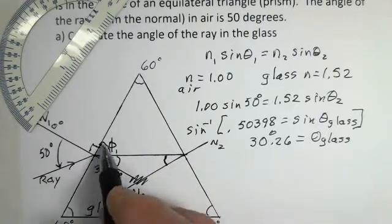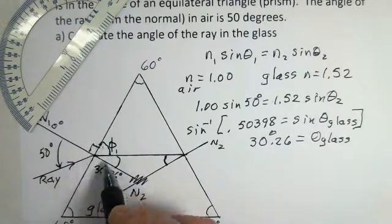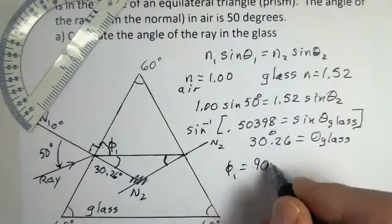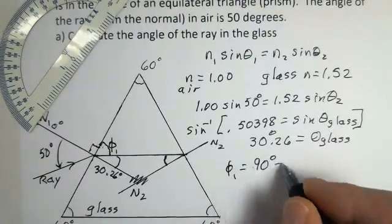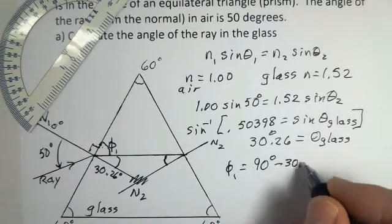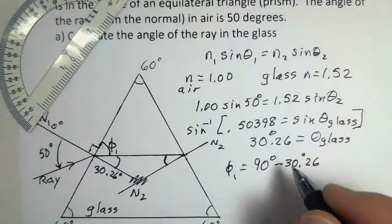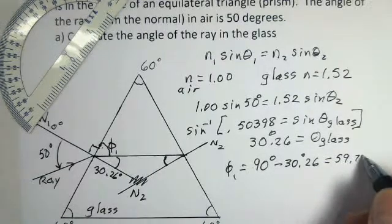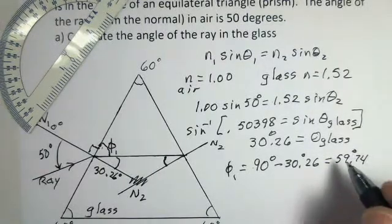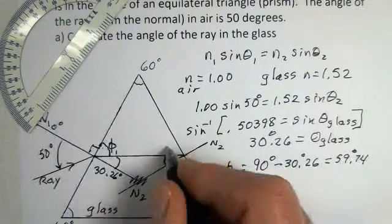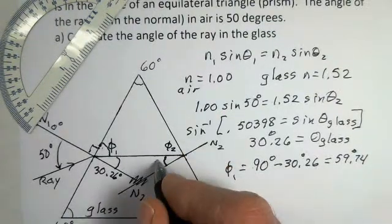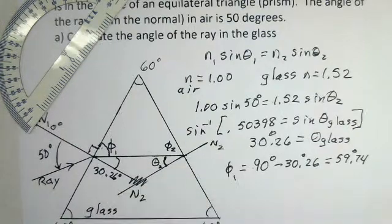Well the normal over here is 90 degrees away from our surface so Phi 1 the full angle to the normal from the surface is 90 degrees and we use up 30.26 with that ray so Phi 1 if I'm doing the calculation right here 59.74 degrees. I need Phi 2 before I can get this theta over here.